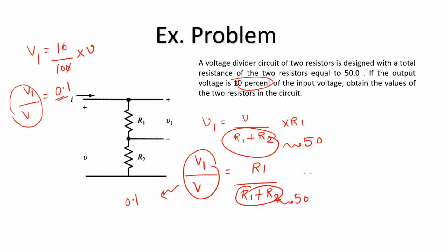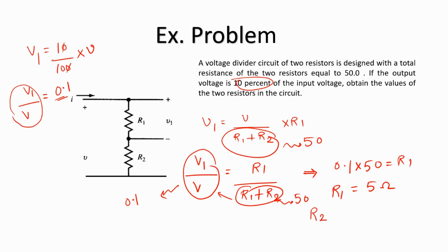We know V1 by V is 0.1 and R1 plus R2 is 50 ohms. Cross-multiplying gives 0.1 into 50 equals R1, so R1 is 5 ohms. Since R1 plus R2 equals 50, R2 would be 50 minus 5, which is 45 ohms.